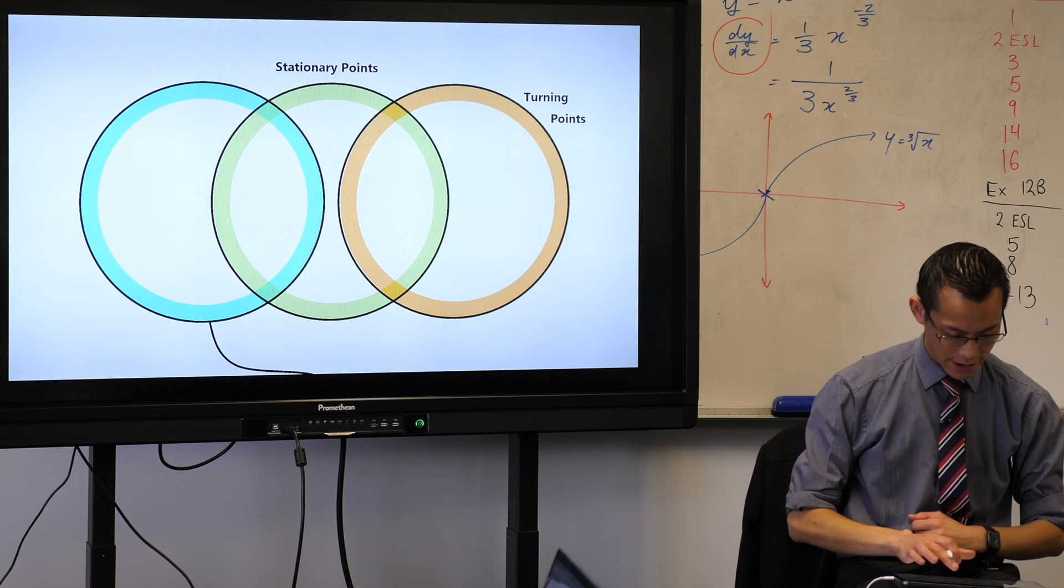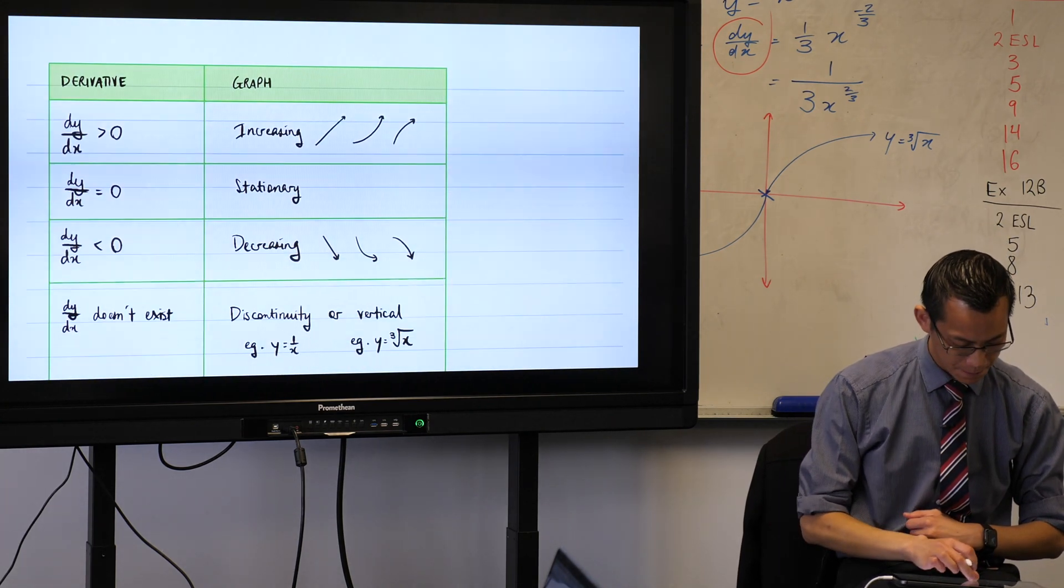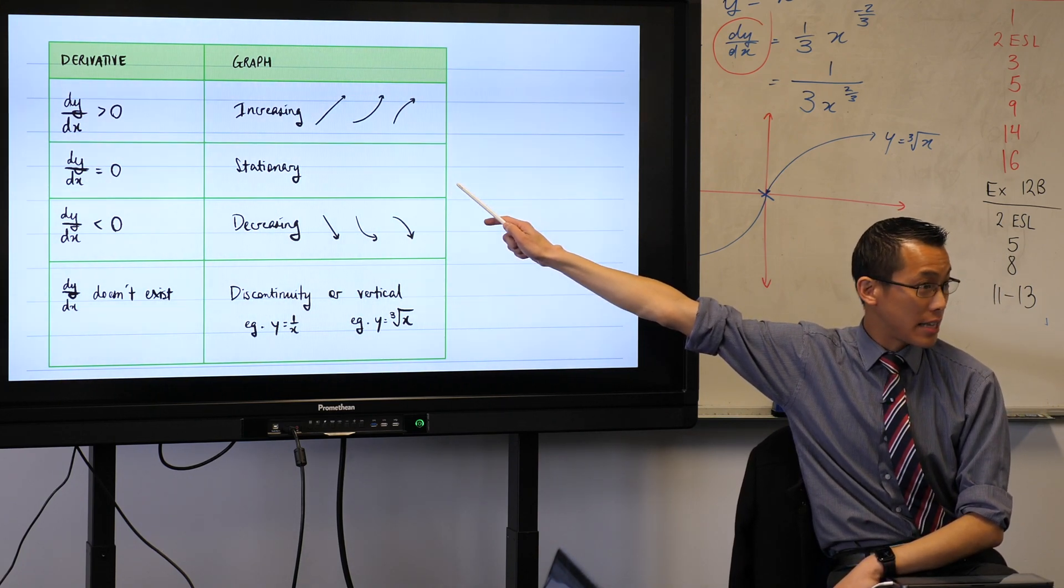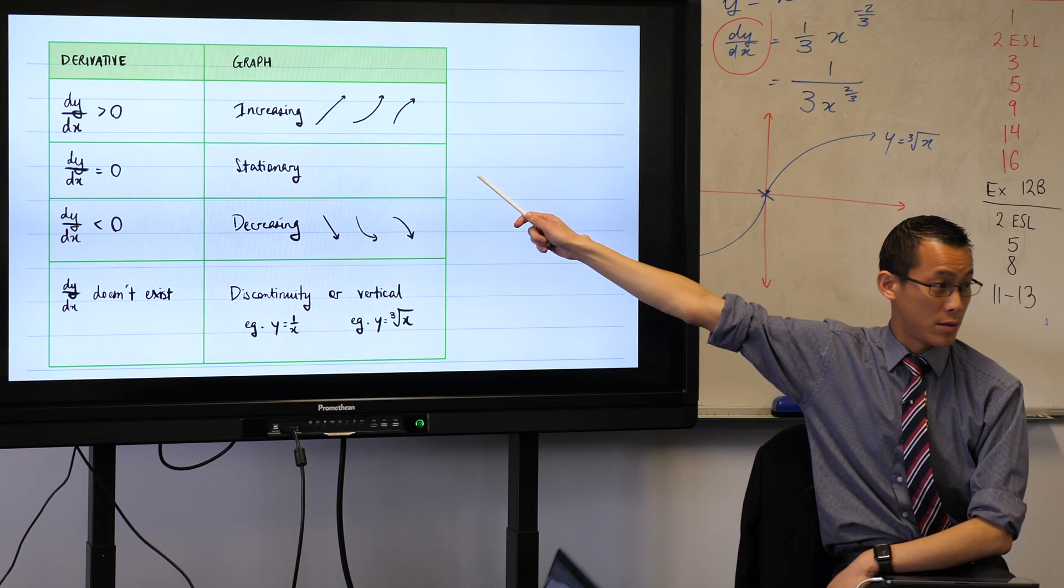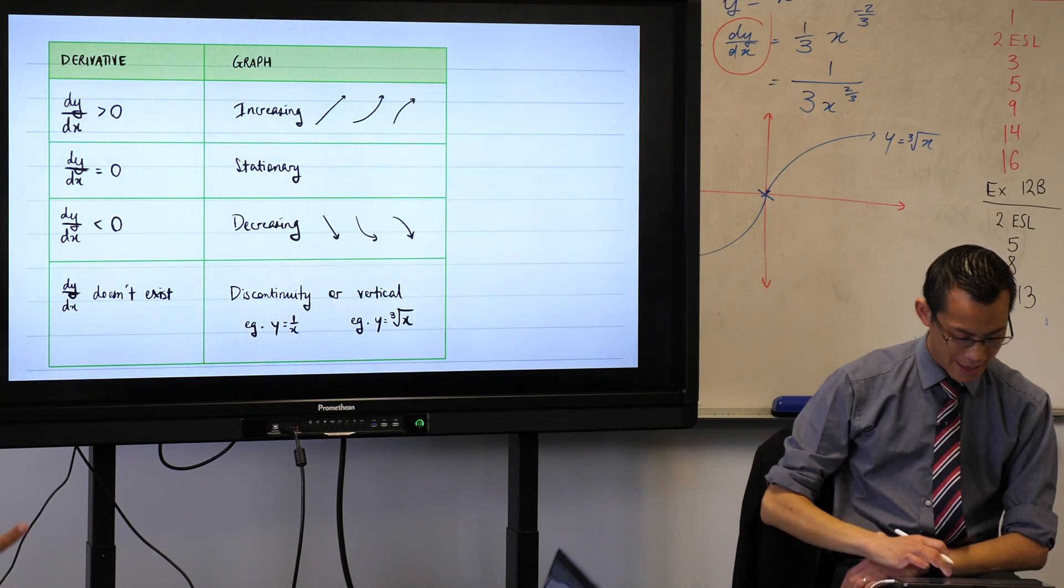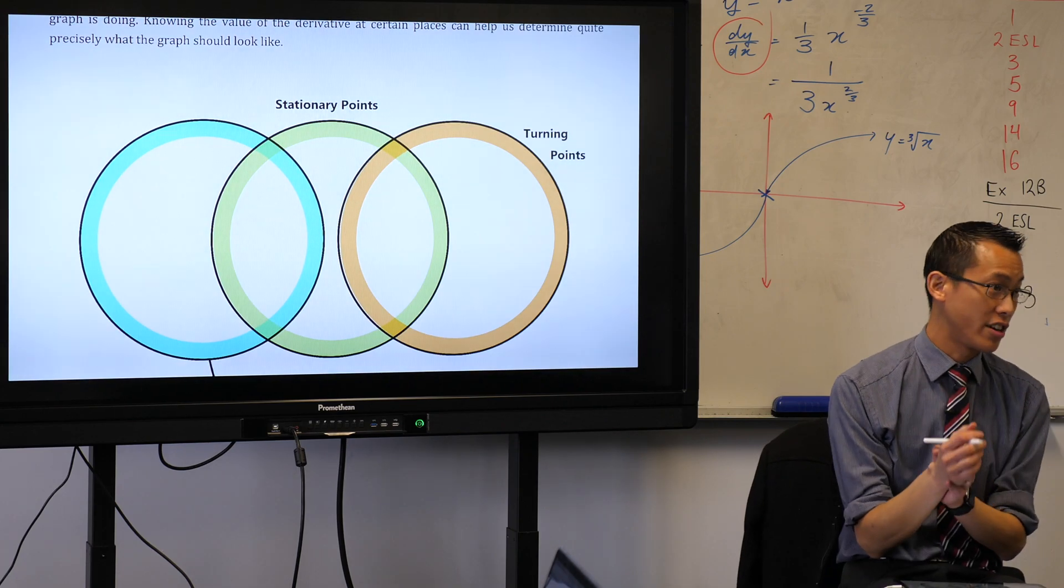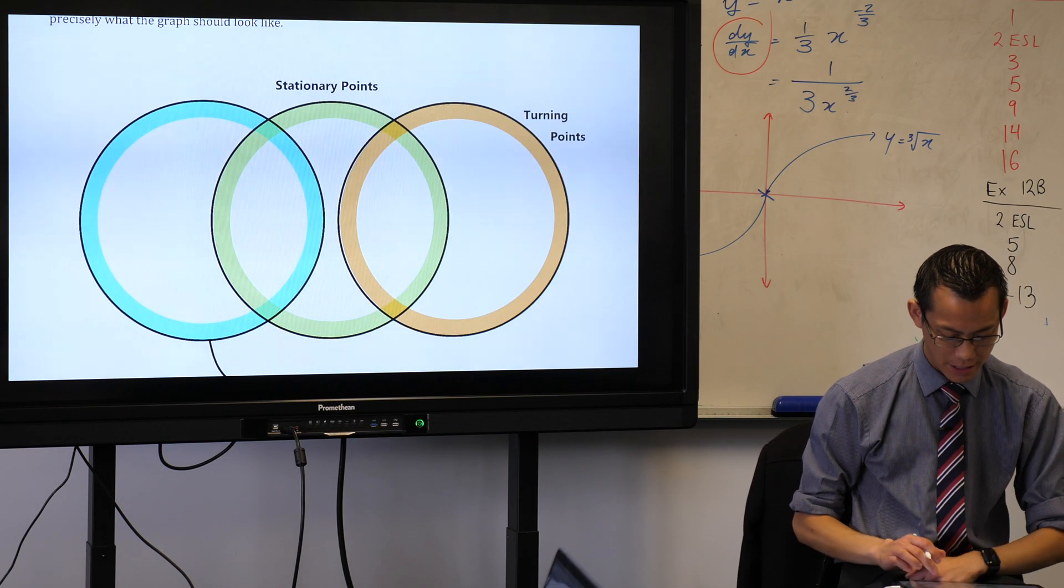So you know how in our table we said - in fact, my table is here - in our table, we said when things are stationary, when your derivative is equal to zero, that's really important. We focus a lot on that. So I want us to fill in a little more of what's going on here, because there's more than one kind of stationary point, and we kind of alluded to that just now.